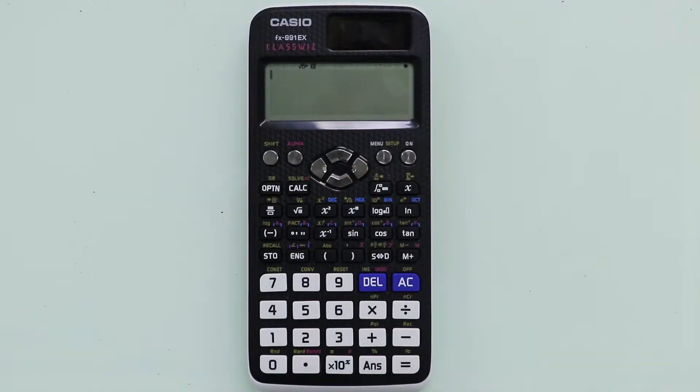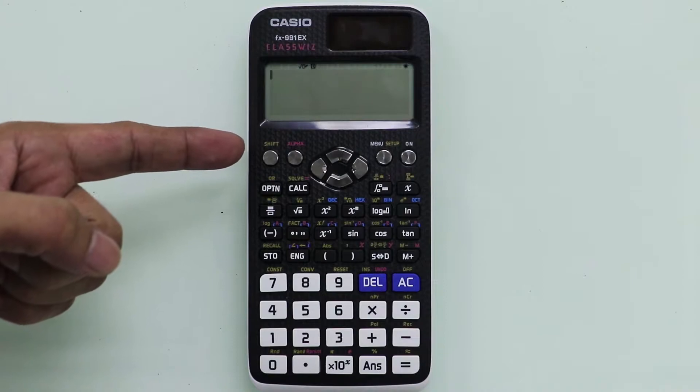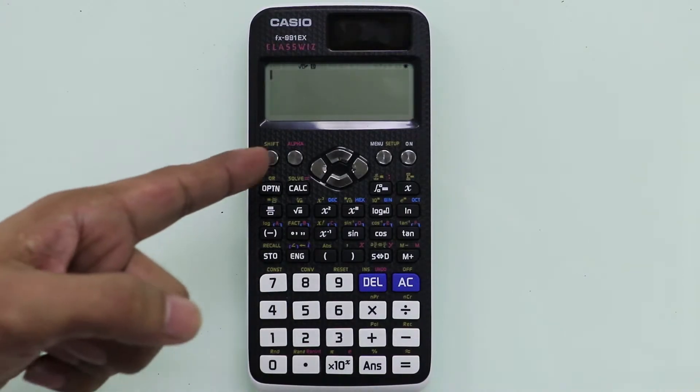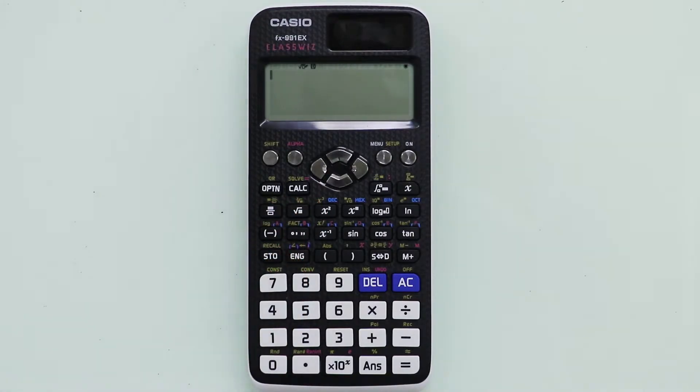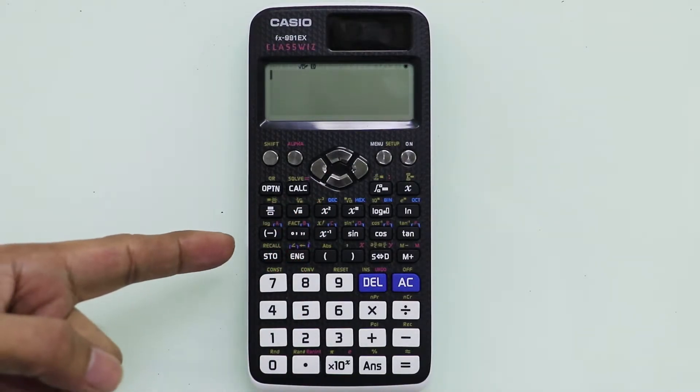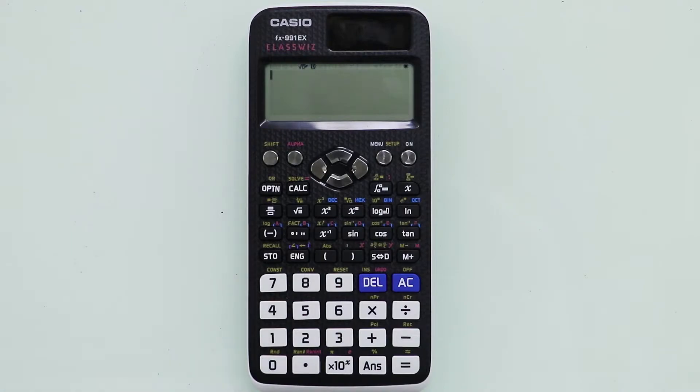Okay, so the first thing that we have to know about the calculator is its color coding. So as you can see we have here some yellow keys and we have some red keys, also we have blue keys and violet ones.